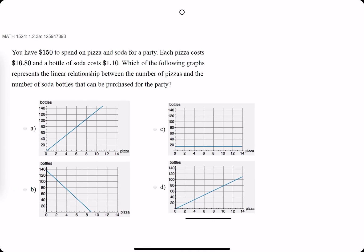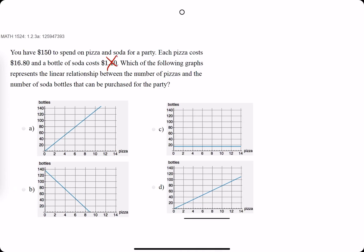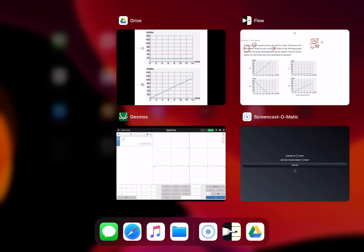So we imagine we're not buying any sodas and we're only buying pizza with $150. So we take $150 divided by $16.80 to find out how many pizzas we can buy if we weren't buying soda. So we do $150 over $16.80.